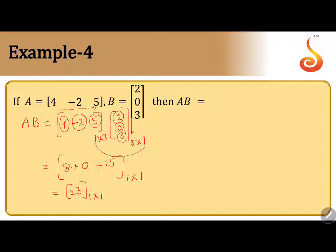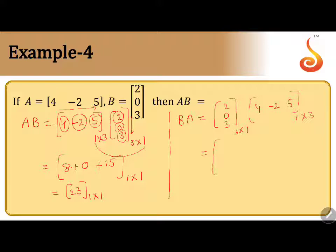This is the answer for AB. Additionally, if they ask for BA, write matrix B as [2, 0, 3] and then matrix A as [4, -2, 5]. First matrix B is of order 3 by 1, and second matrix A is of order 1 by 3. The order of the product BA will be 3 by 3, meaning we are going to get 3 rows and 3 columns. Take elements row-wise from B and column-wise from A.